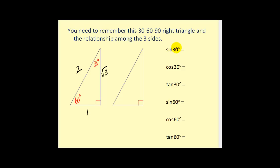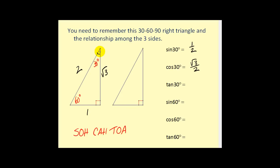We can use this to determine the trigonometric function values for 30 degrees and 60 degrees. If it helps, you can remember the acronym SOHCAHTOA. The sine of 30 degrees — using the opposite over hypotenuse — is one over two, or one half. The cosine of 30 degrees is adjacent over hypotenuse, or square root of three over two. The tangent of 30 degrees is the opposite over the adjacent, which is one over the square root of three, and if we rationalize that, it equals square root of three over three.